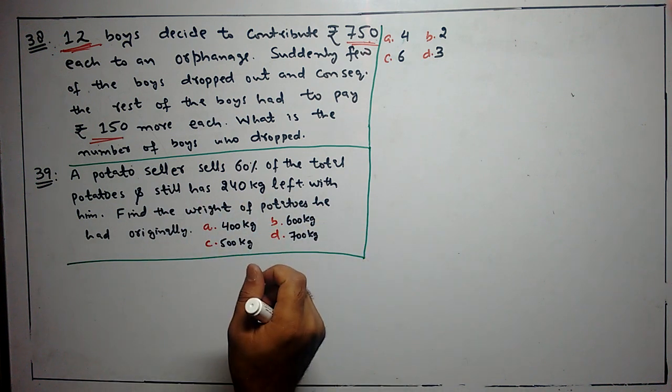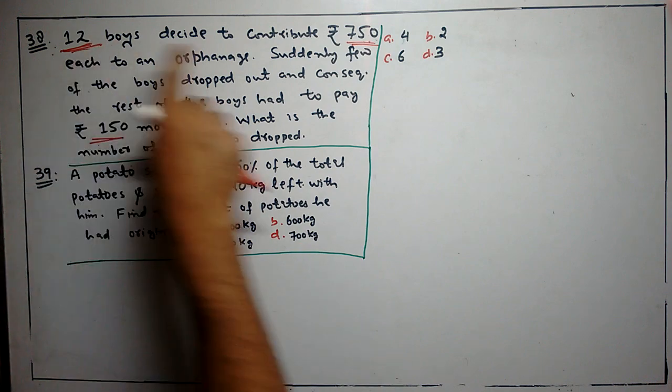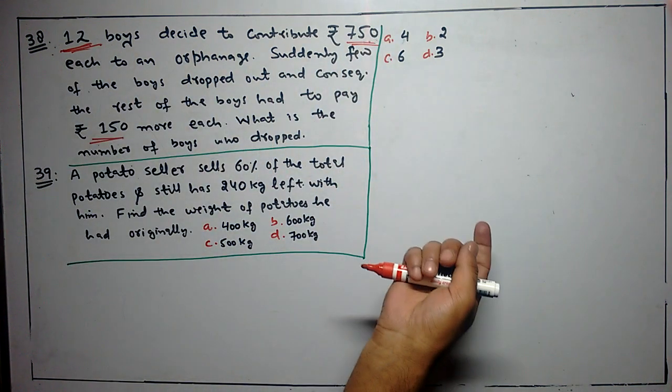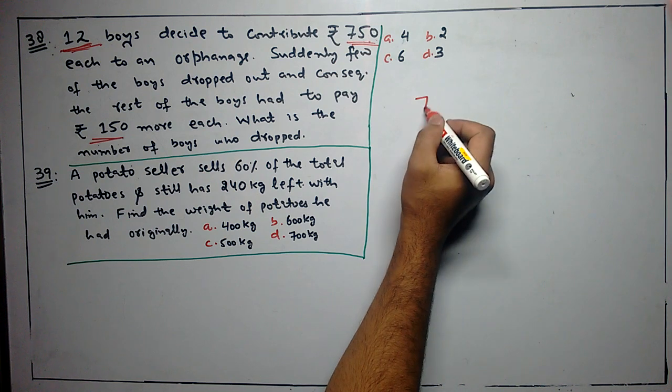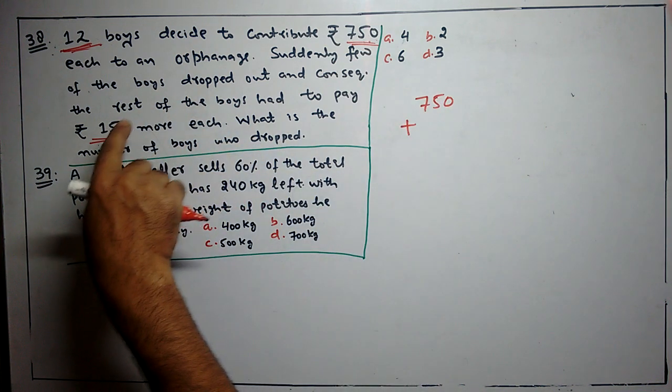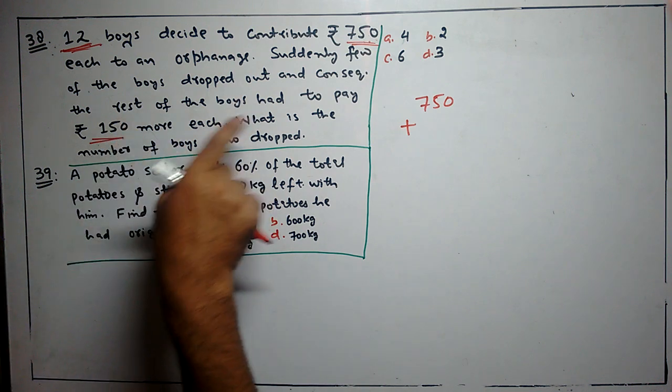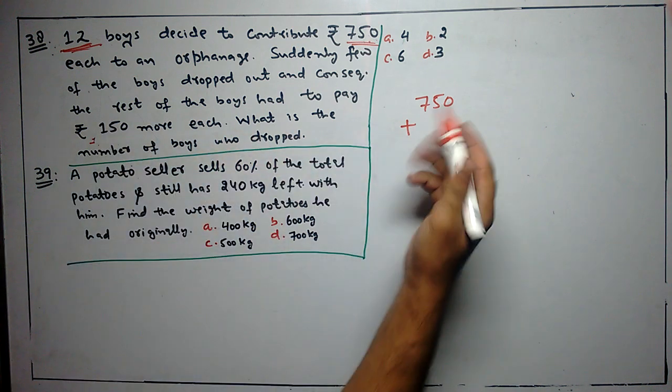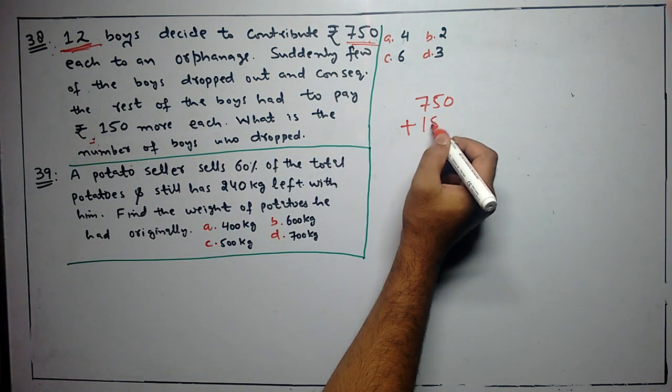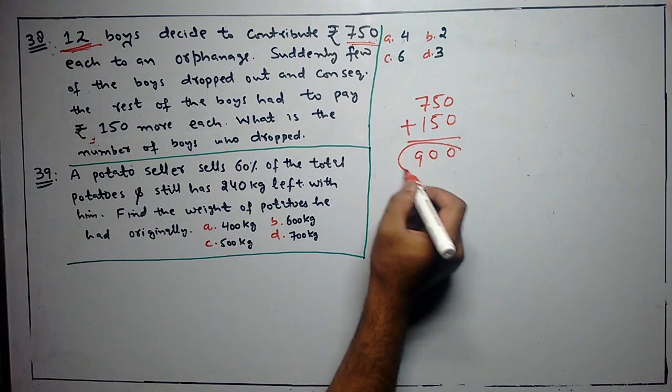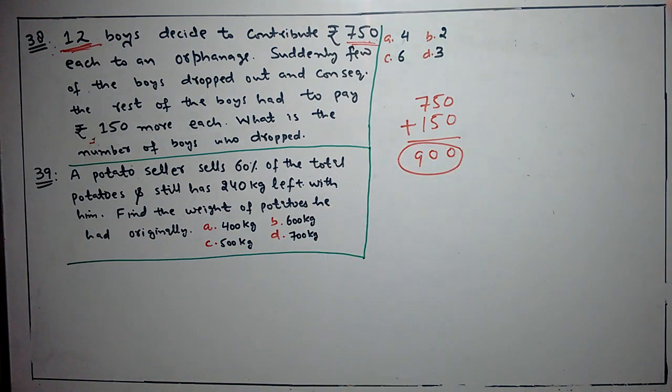That means when there were 12 boys, they had to pay 750. Every time they left, they will just add 750 rupees to that. Here, they have to pay 150 more. That means 750 plus 150 gives us 900 rupees.